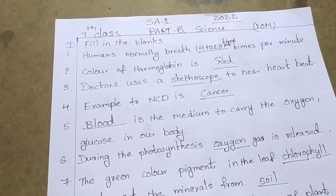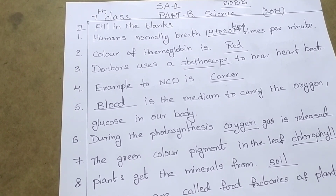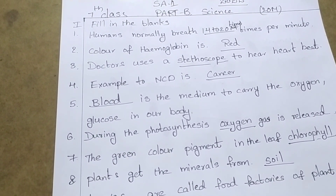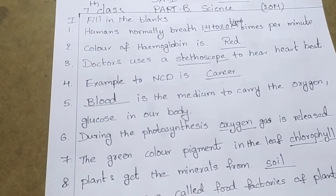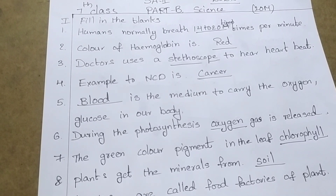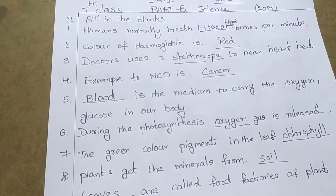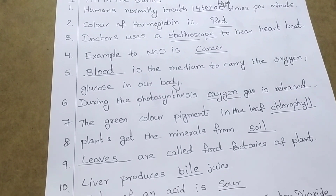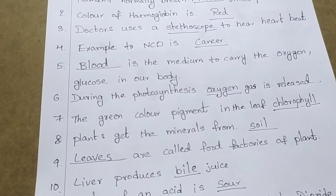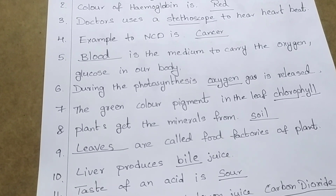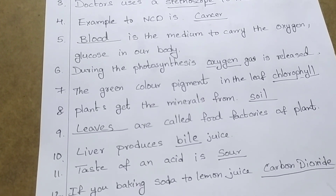Fill in the blanks — 20 marks: Human normal breathing rate is 14 to 20 times per minute. The color of hemoglobin is red. Doctors use a stethoscope to hear heartbeat. An example to end acidity is cancer. Blood is the medium to carry oxygen and glucose in our body.